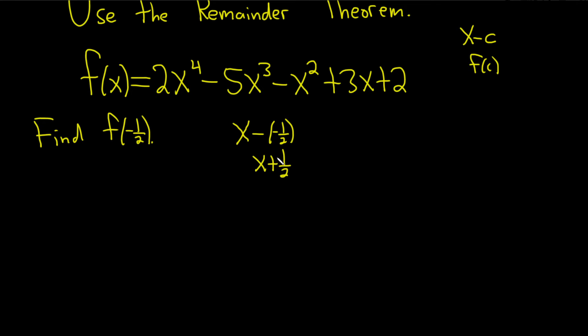So when you're dividing by x plus 1 half, you basically flip the sign. So we have negative 1 half, just like we had here. So it makes it really easy, you see. Draw a little bracket.